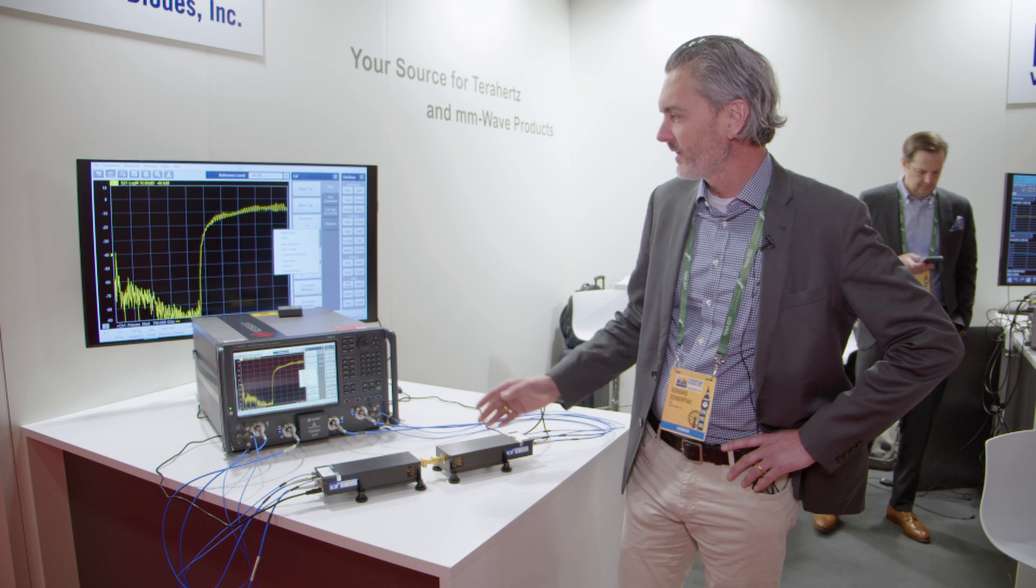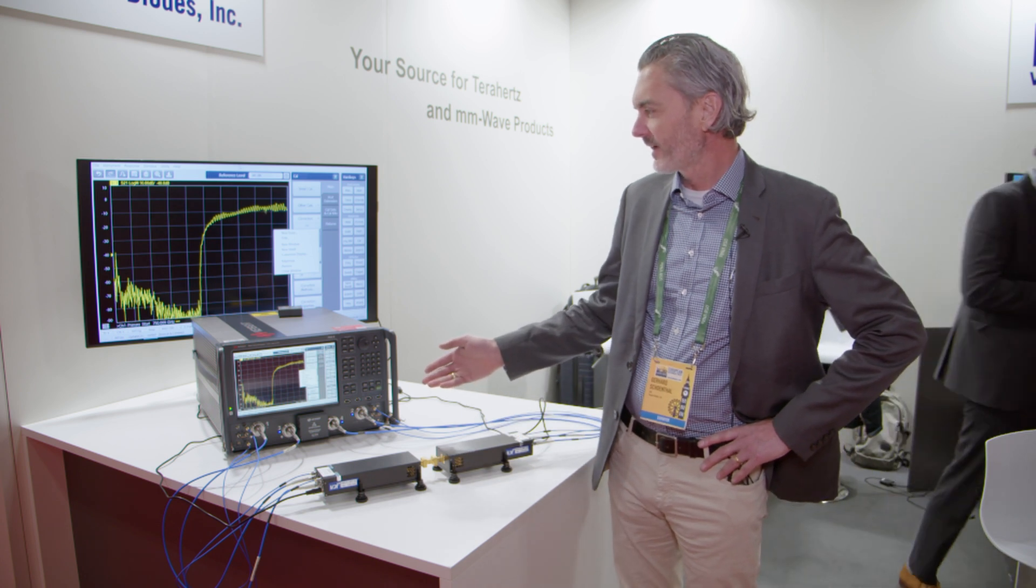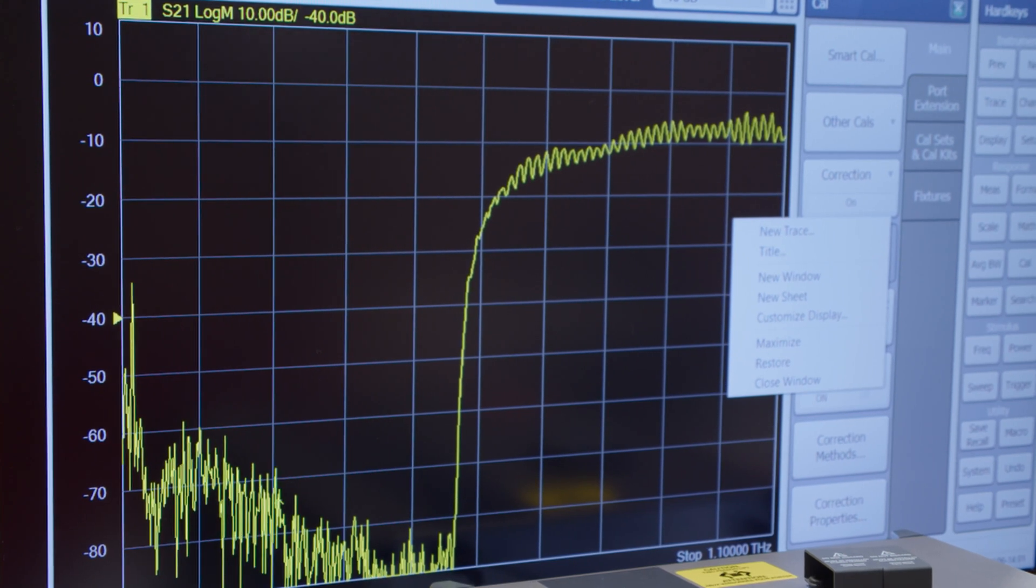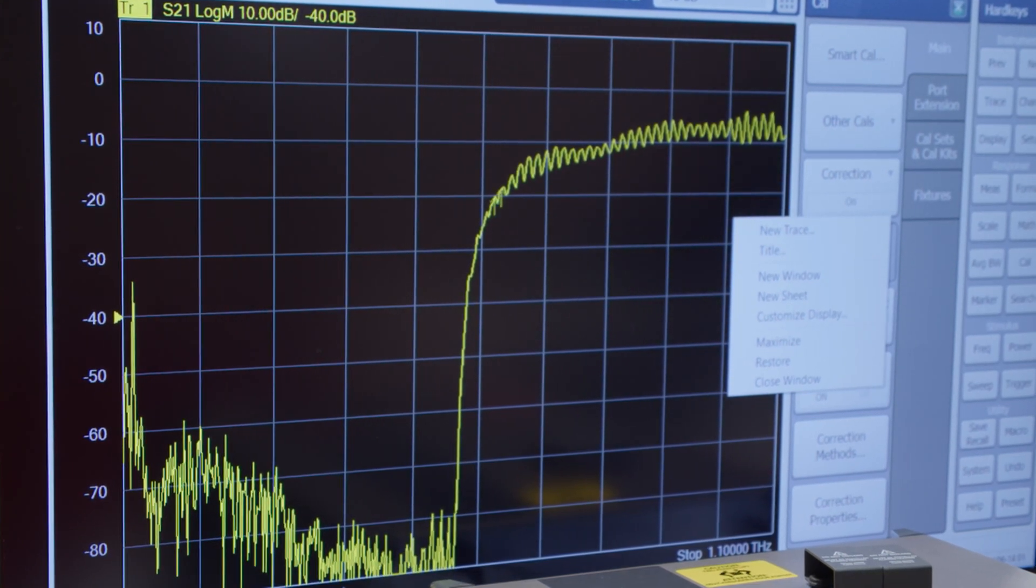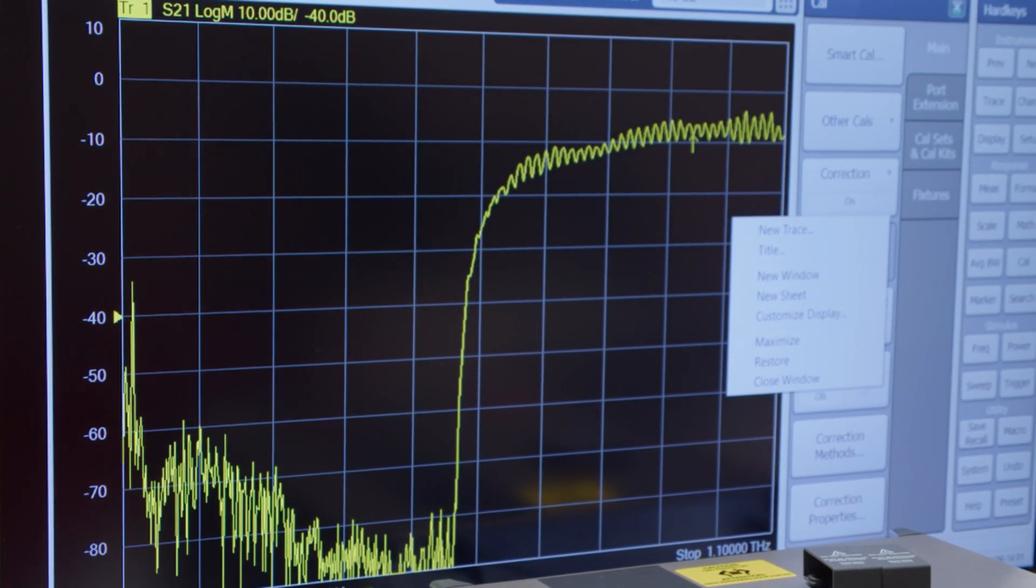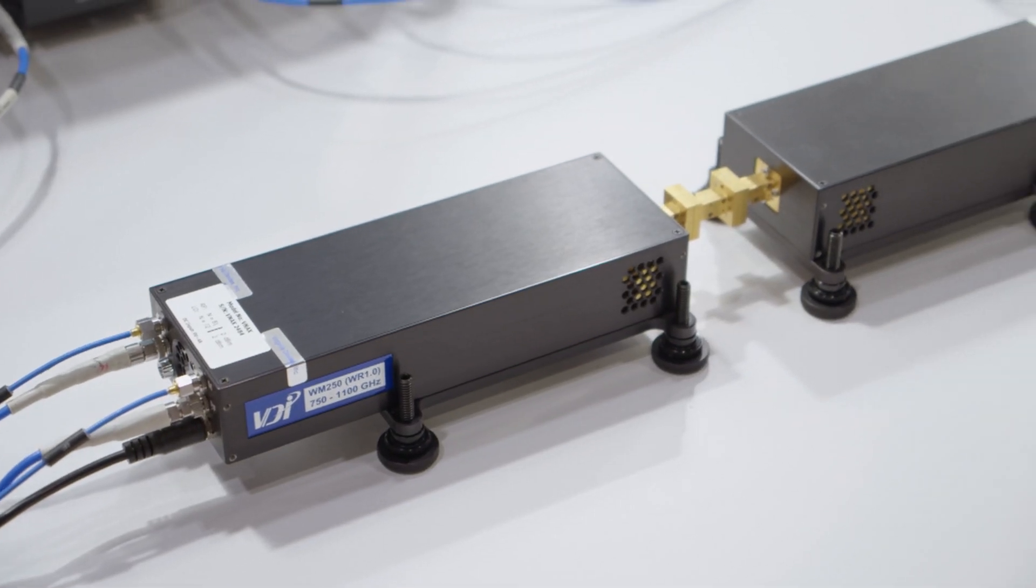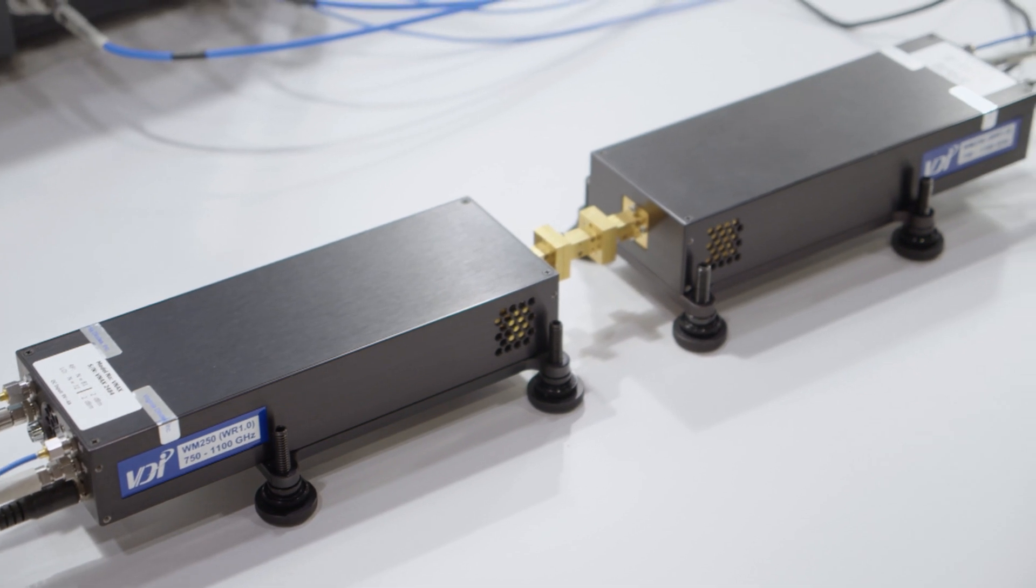What you see in the camera today is a Keysight network analyzer that goes up to 26 gigahertz and this is the VDI product. These are frequency extension modules for VNAs.